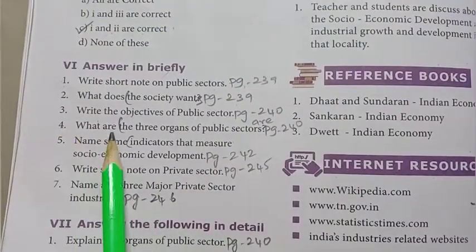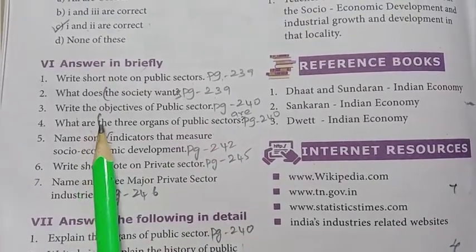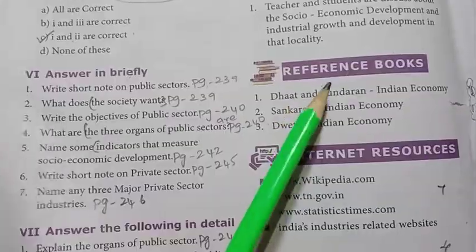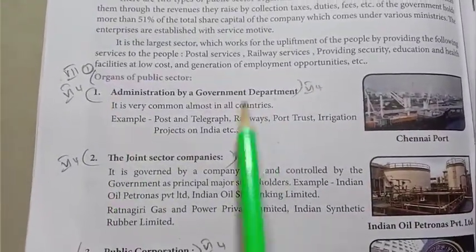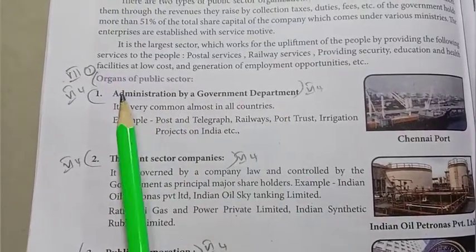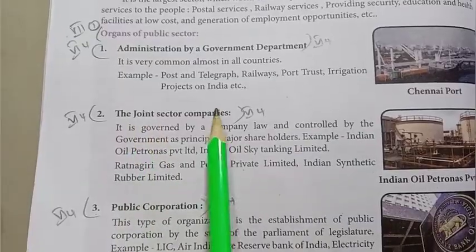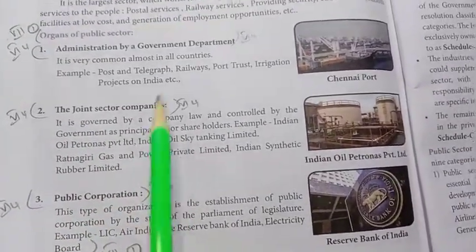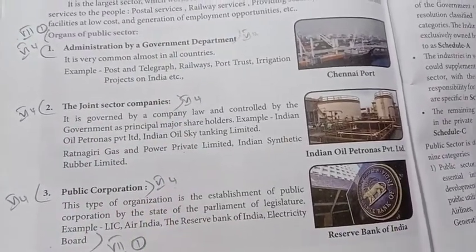Fourth one: what are the three organs of the public sector? Refer to page number 240, under the heading 'organs of public sector' in bold letters. The three organs are: administration by a government department, joint sector companies, and public corporation.